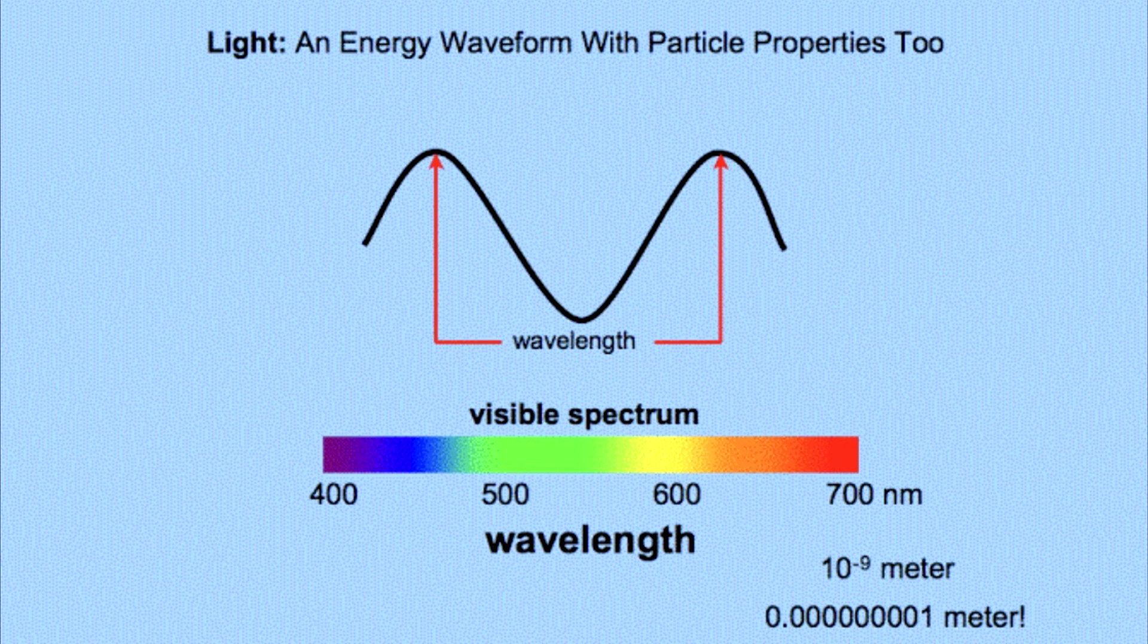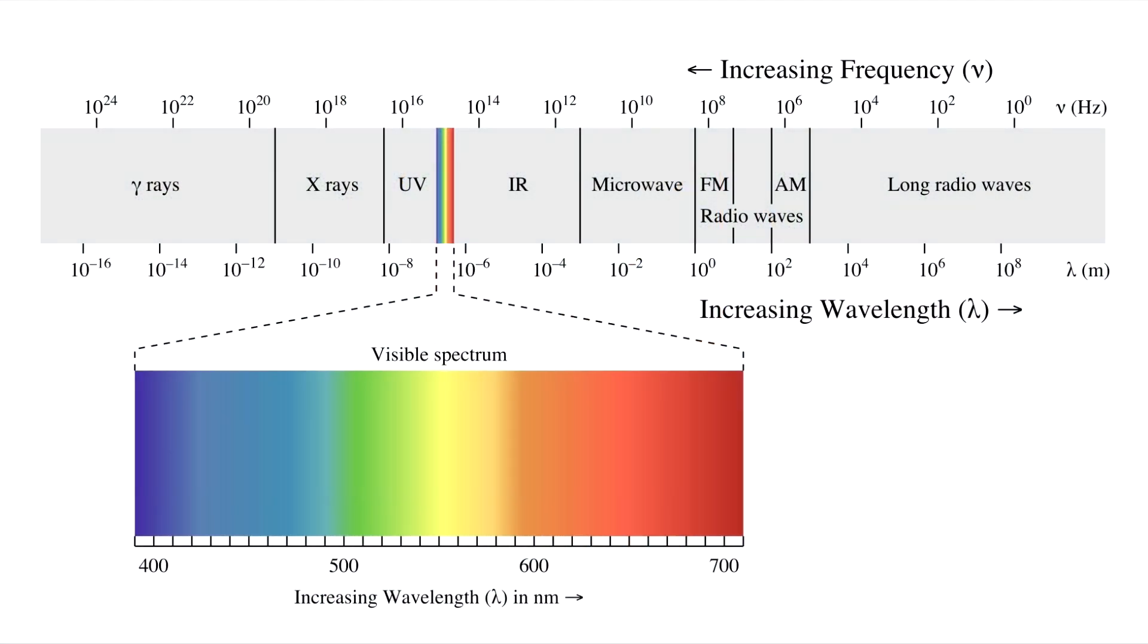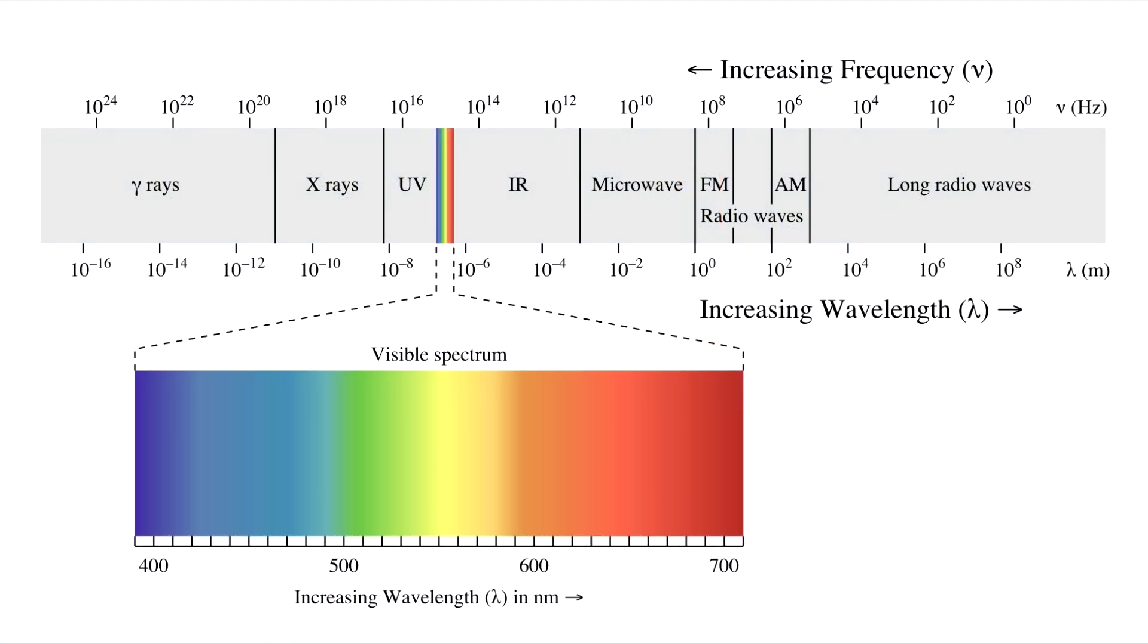So the full range of various wavelengths is known as the electromagnetic spectrum, which you're seeing right here. And on this electromagnetic spectrum, not all of the light is visible to the human eye. In fact, only a small portion is, and that portion is the wavelengths that measure between 400 nanometers and 700 nanometers.